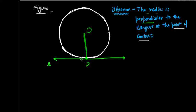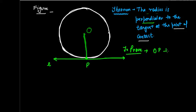Now we need to prove our result. What do we need to prove? Required to prove: OP is perpendicular to L. So OP forms a right angle with tangent L.